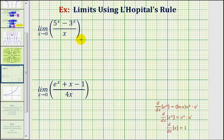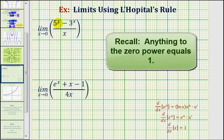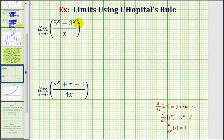Looking at our first example, notice that as x approaches zero, five to the power of x would approach one, three to the power of x would approach one, and one minus one is equal to zero. And as x approaches zero, the denominator approaches zero as well. So this is the indeterminate form of zero divided by zero, and therefore we can apply L'Hopital's Rule to help us determine this limit.